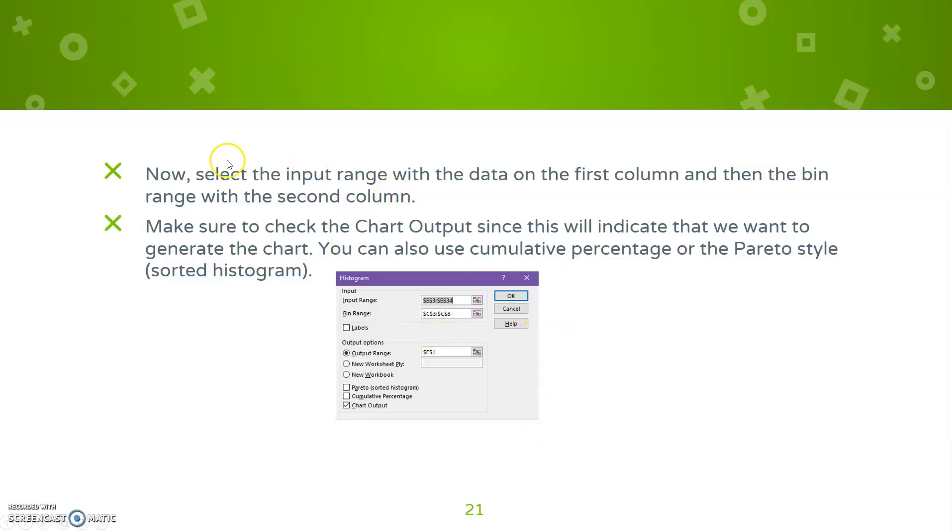Now I select which data point I want. So I'm going to select that data point that had all those ACT scores. That was my first column. Then my bin range, that was my bins. That's what it's going to be on my X axis. And then I press okay.